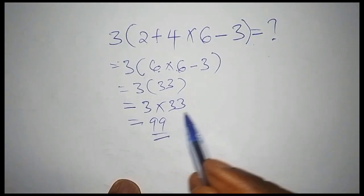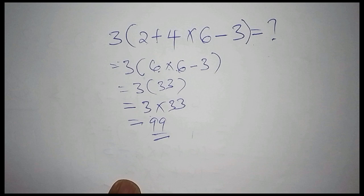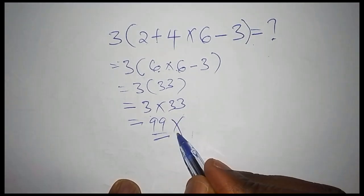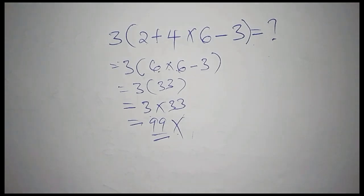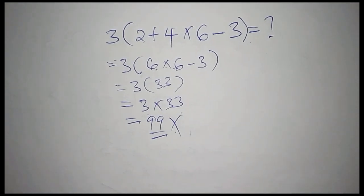When you get 99, you have not followed the correct order of operations and finally your answer will be wrong. The correct order in which you're supposed to do this mathematics is this.